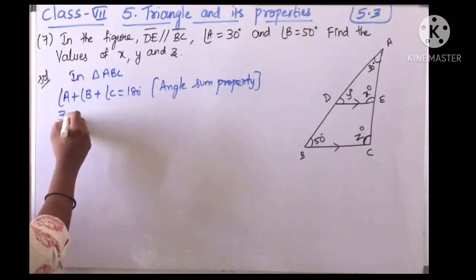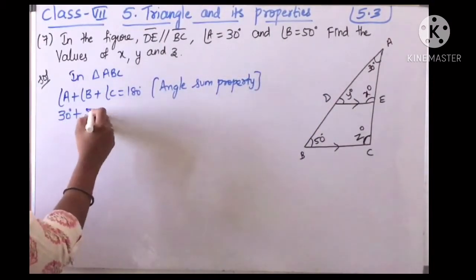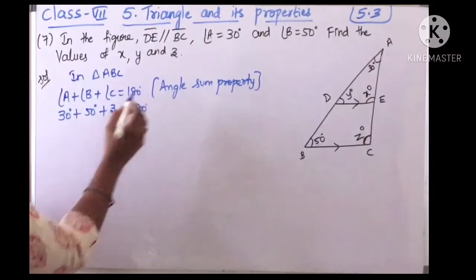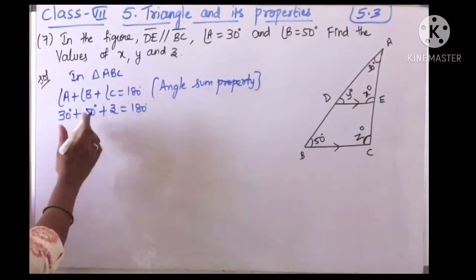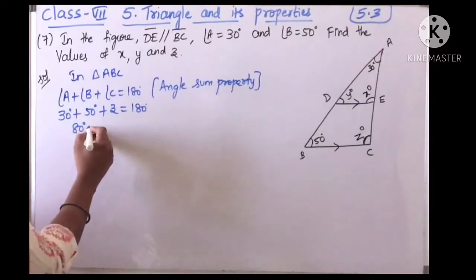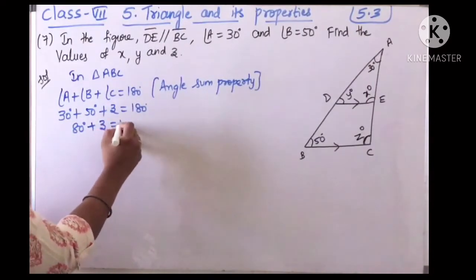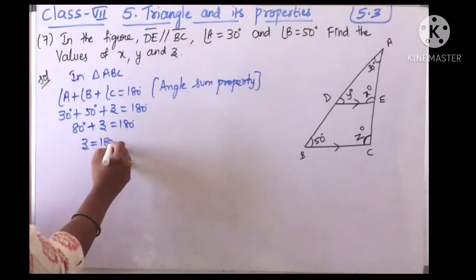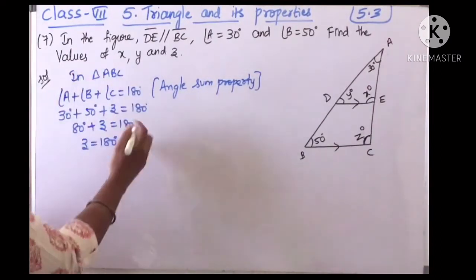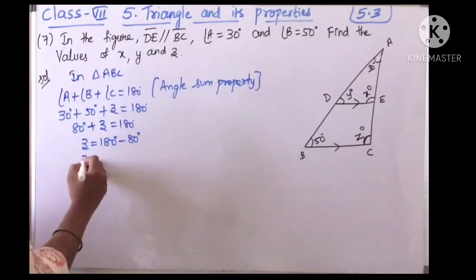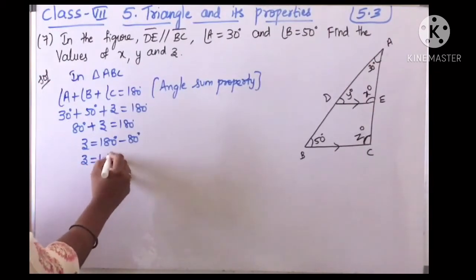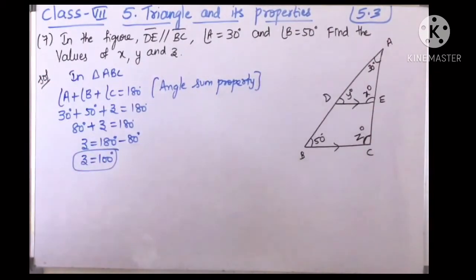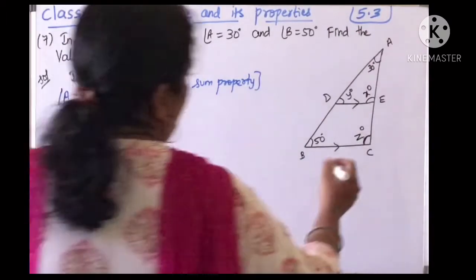In triangle ABC, angle A plus angle B plus angle C equals 180 degrees (angle sum property). Angle A is 30 degrees, angle B is 50 degrees, and angle C is Z. So 30 plus 50 plus Z equals 180. That gives 80 plus Z equals 180, so Z equals 100 degrees.